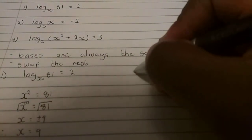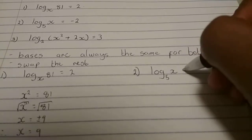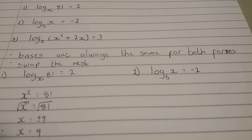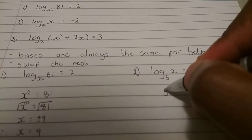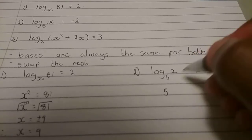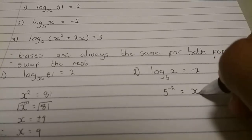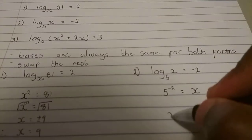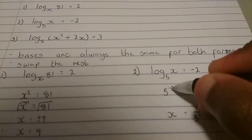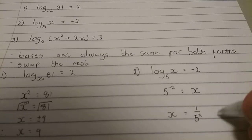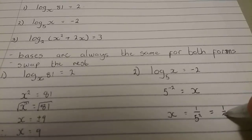Let's go to the second question. Second one is log 5x is equal to minus 2. Now remember, first rule, the bases are always the same and then I swap the rest. So the minus 2 comes there and the x goes there. Now this you can rewrite as 1 over 5 to the 2. The minus 2 just means that it's 1 over 5 or exponent 2. So the final answer is 1 over 25.